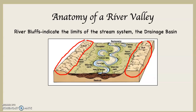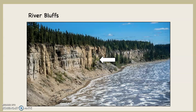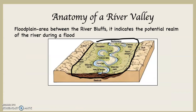First, you can see I circled in red the river bluffs. These are erosional features, and they indicate the limits of the stream system. In other words, this is kind of a version of the drainage basin — everything between those river bluffs is part of the same river system. You can see what they look like here in this picture with a white arrow pointing at river bluffs.